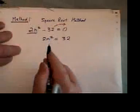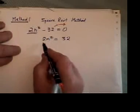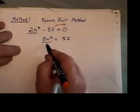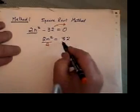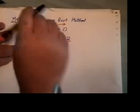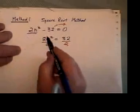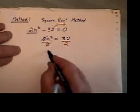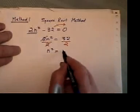The next step is to isolate the power. The power is being multiplied by 2, and the opposite of multiplying is dividing. So I'll divide both sides by 2, that cancels that, and I'm left with n squared equals 16.